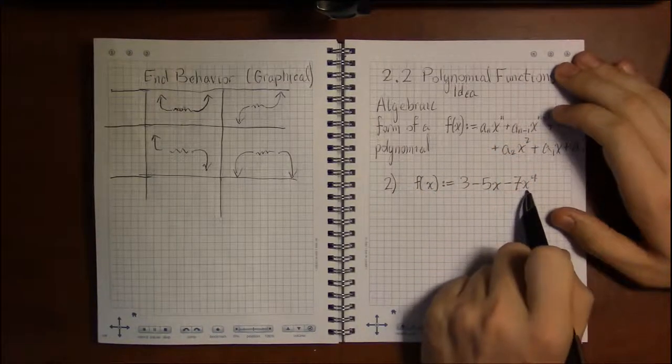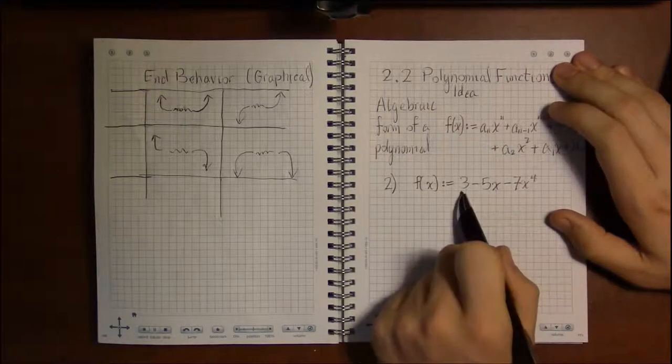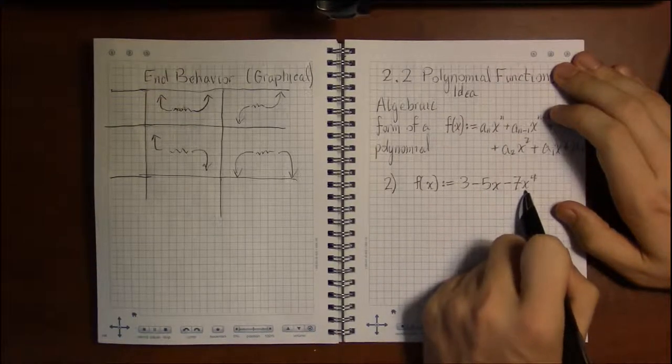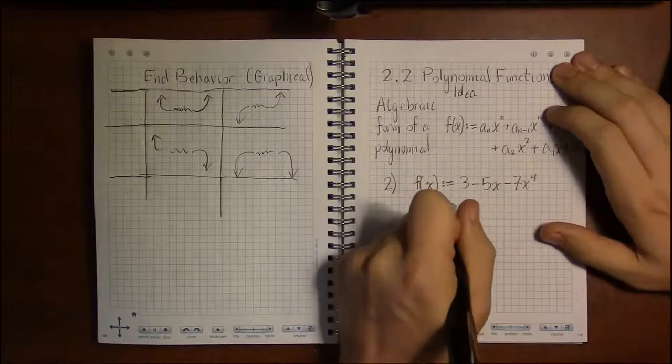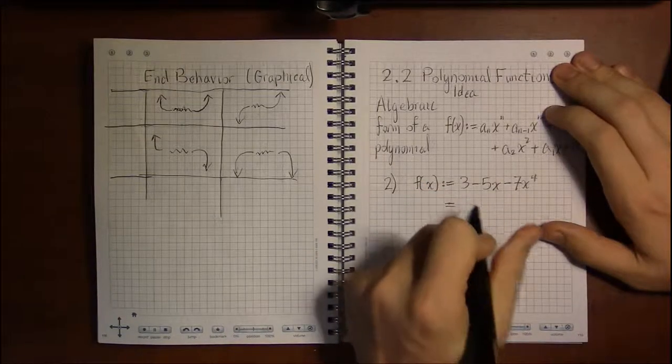Standard form reorders these terms and writes them so that the highest power of x comes first, and we just go down. The next term is the next highest power of x. In this case, the highest power is 4 (x⁴), so we write the term that has x to the fourth, namely -7x⁴, first.